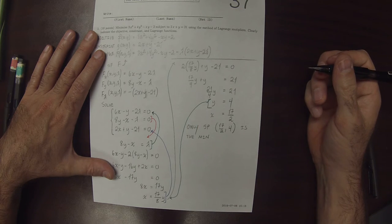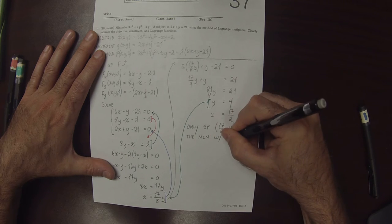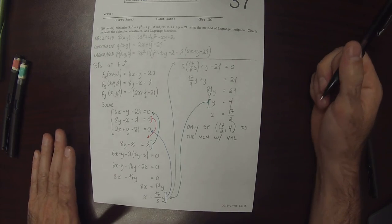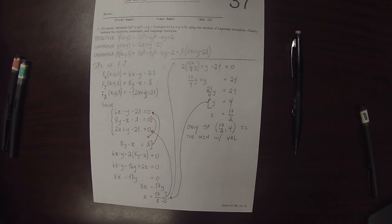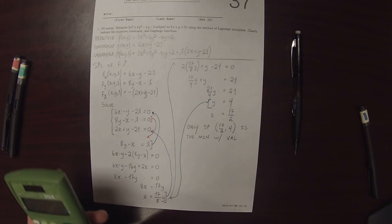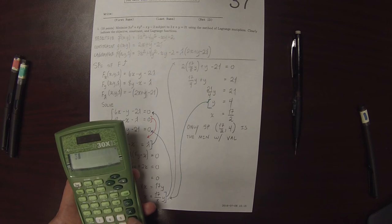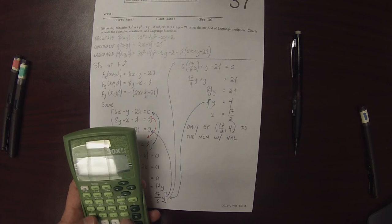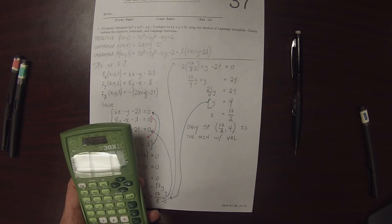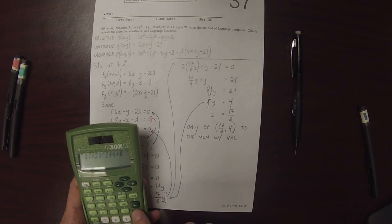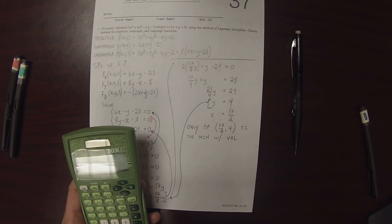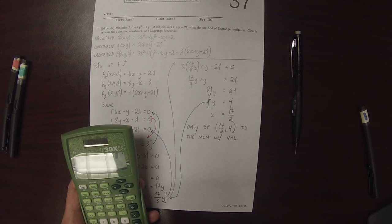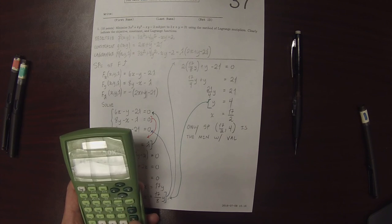And so to find the minimum value, we need to plug this value into the original function. So that will be 3 times 17 over 2 squared plus 4 times 4 squared minus 17 over 2.